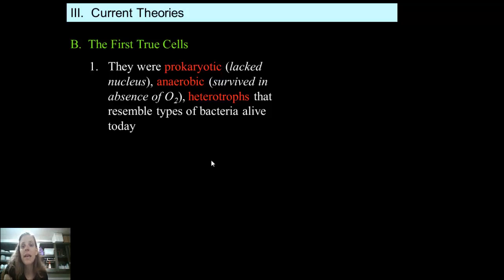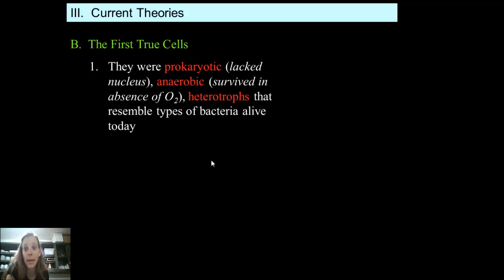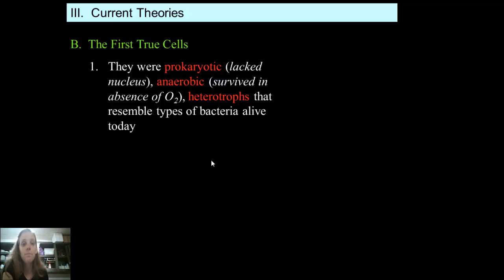A heterotroph is anything that has to consume something else in order to get its energy. You and I are both heterotrophs because we have to eat something else in order to get our energy. We can't make our own food like plants can — we don't photosynthesize, as convenient as that would be.